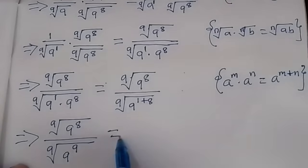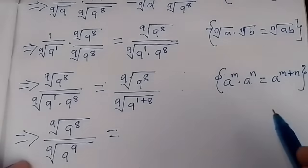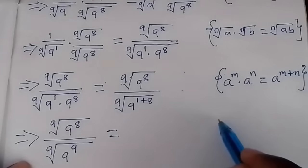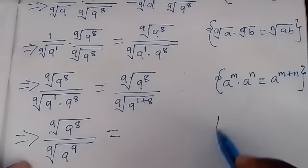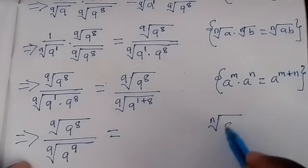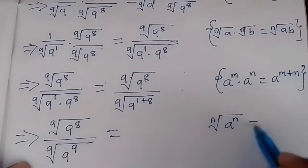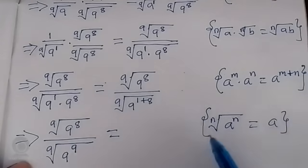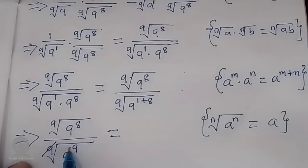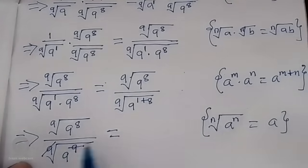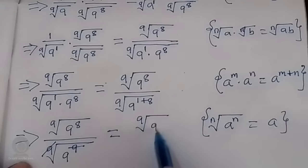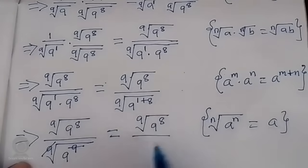Now we apply the rule that the nth root of a raised to power n is the same as a — a very powerful rule. By its application, the 9th root of 9 to power 9 simplifies to 9. So next we have the 9th root of 9 raised to power 8, over 9.